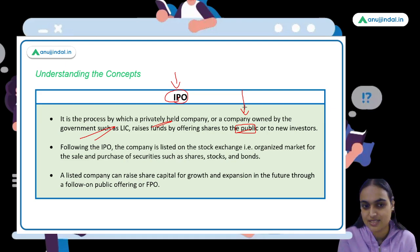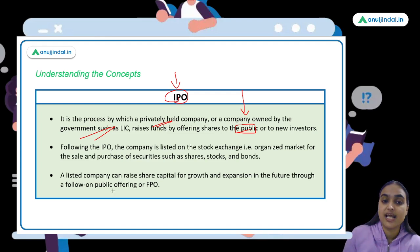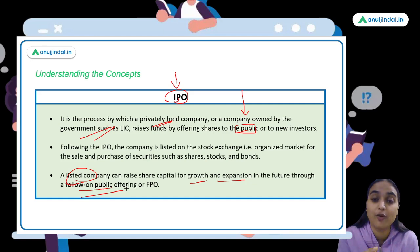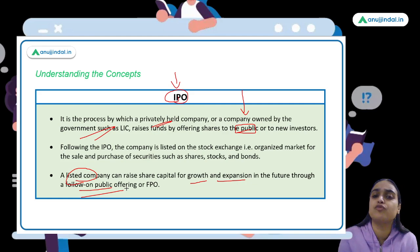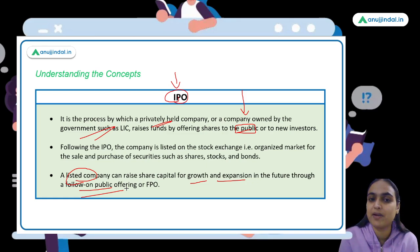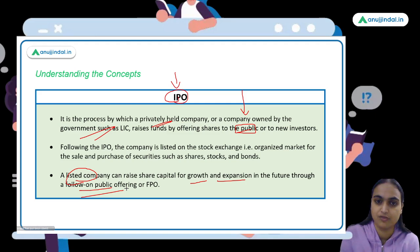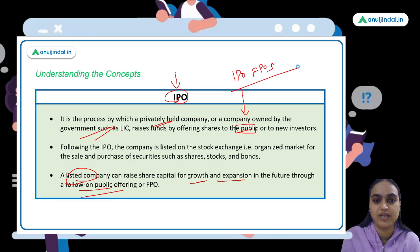Once a company is listed and later wants to raise more money for its growth or expansion, that's a Follow-on Public Offering (FPO). When a company raises funds from the public for the first time and gets listed on a stock exchange, that's an IPO. Once it's already listed and issues new securities to raise further funding, that's a Follow-on Public Offering — it's a follow-up to the initial listing.